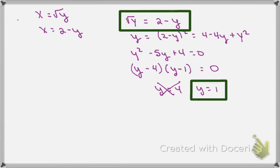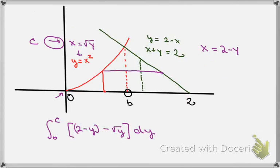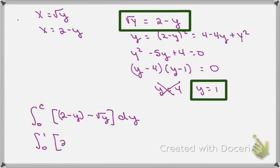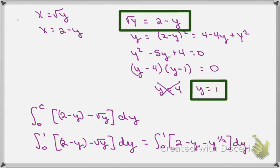So that integral that we had from the previous slide, I know now that that upper limit is 1, so that integral is going to become the integral from 0 to 1 of 2 minus y minus the square root of y dy. I can rewrite that as the integral from 0 to 1 of 2 minus y minus y to the 1 half power dy. And that should be straightforward for you to integrate and calculate the area.